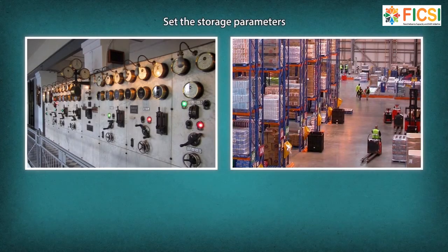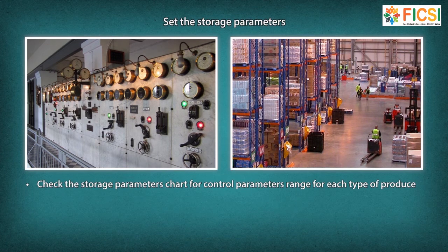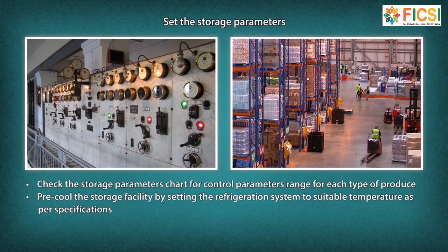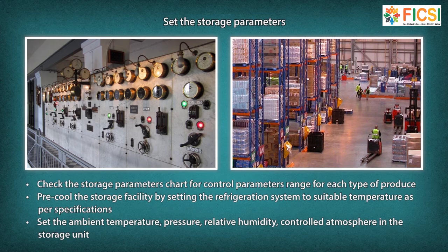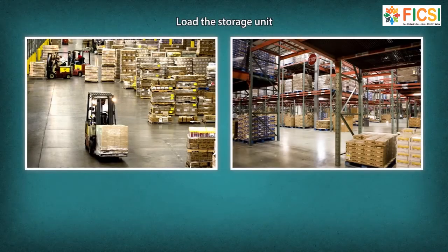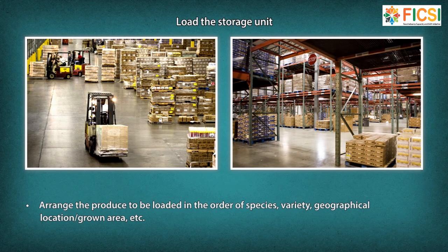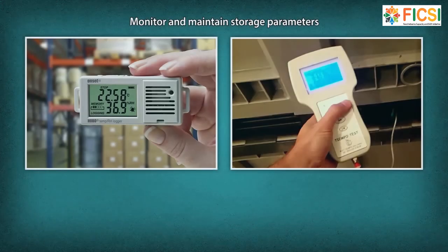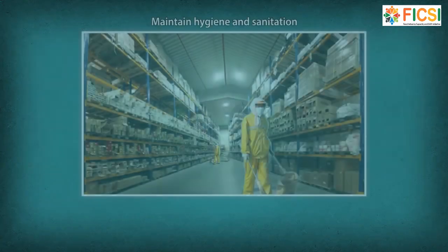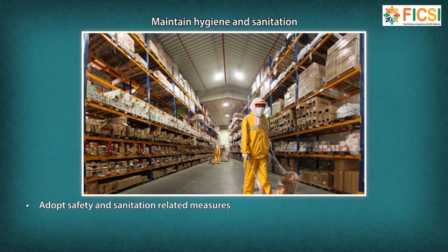Set the storage parameters. The technician checks the storage parameters chart for the control parameter range for each type of produce. They pre-cool the storage facility by setting the refrigeration system to suitable temperature as per specifications, and set the ambient temperature, pressure, relative humidity, and controlled atmosphere in the storage unit before loading.